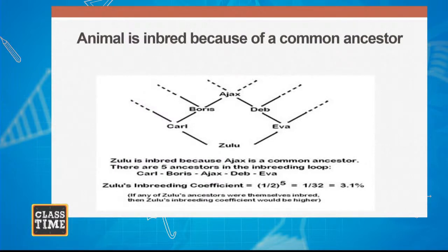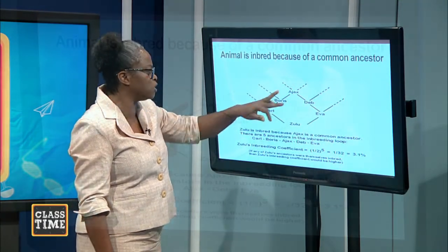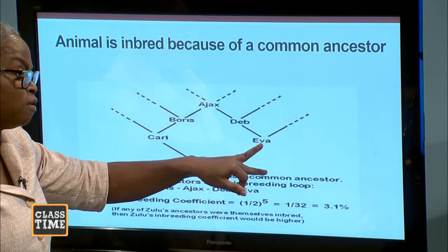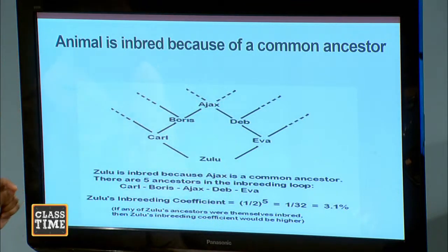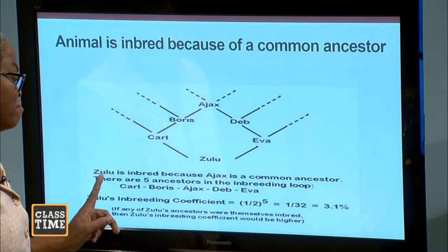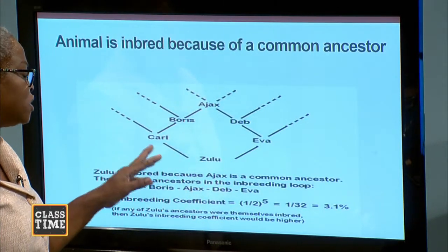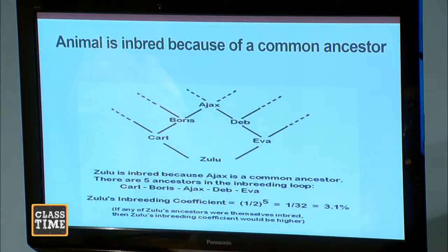This offspring has one common ancestor — the grandfather Ajax. Ajax gives us offspring Boris and Deb. Boris and Deb will mate, giving us offspring Carl, and Deb gives us Eva. The only thing common between these animals is the grandparent Ajax. However, if Carl and Eva should go into inbreeding, there will be a resultant animal called Zulu. Because we are moving down to the third generation, we are saying the inbreeding coefficient would be lower. However, if any of Zulu's ancestors were themselves inbred, then Zulu's inbreeding coefficient would increase, meaning more undesirable characteristics would be found in this animal.